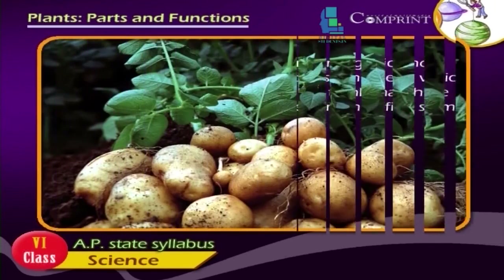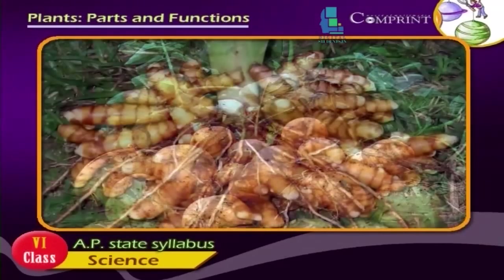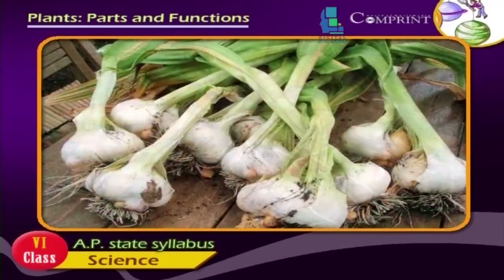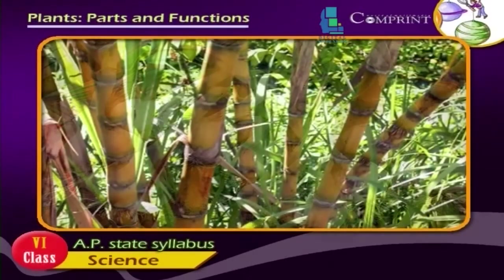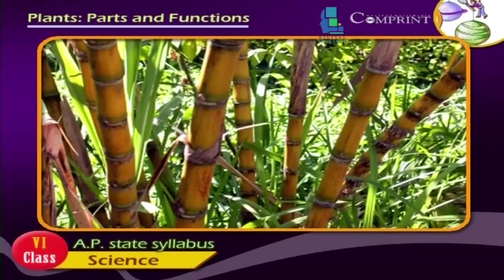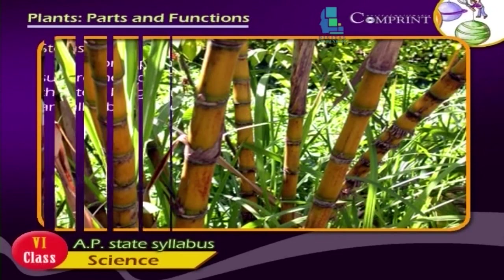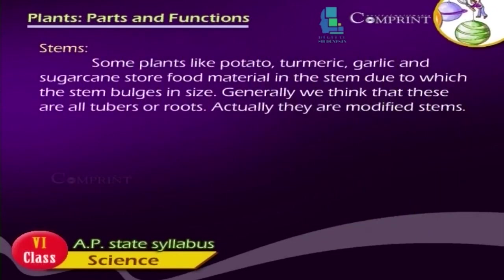Some plants like potato, turmeric, garlic and sugarcane store food material in the stem, due to which the stem bulges in size. Generally, we think that these are tubers or roots, but actually they are modified stems.